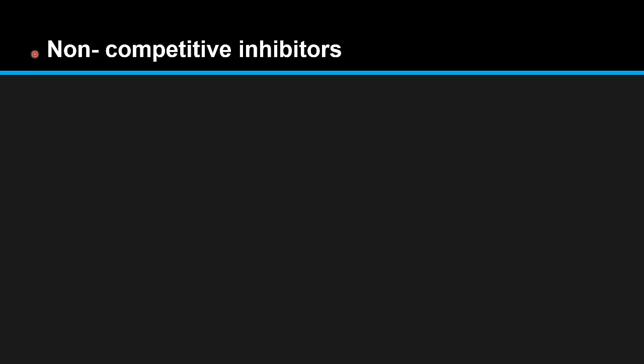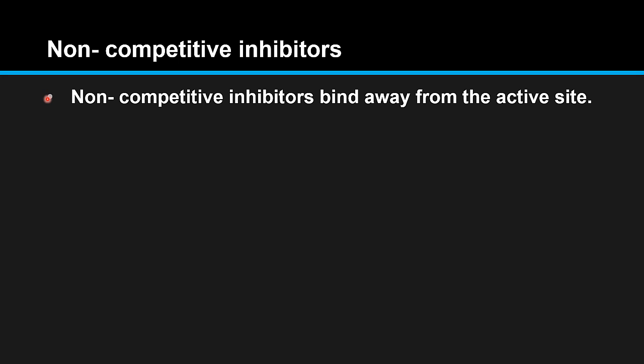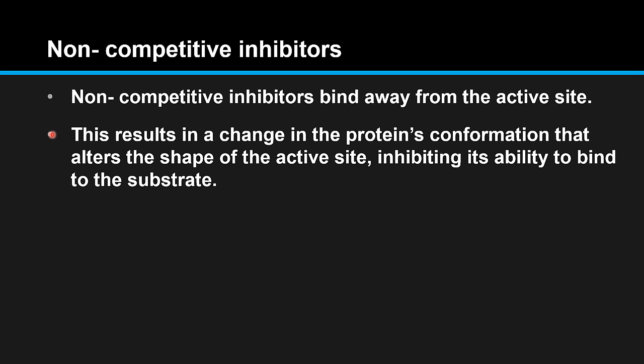Non-competitive inhibitors bind away from the active site. This results in a change in the protein's conformation that alters the shape of the active site, inhibiting its ability to bind to the substrate.